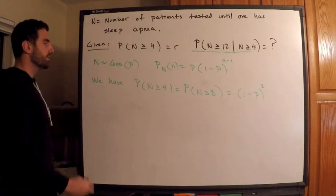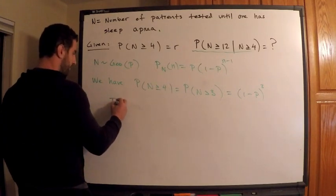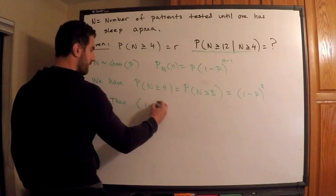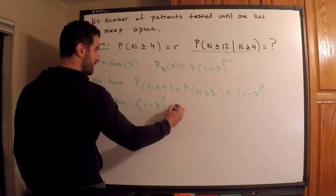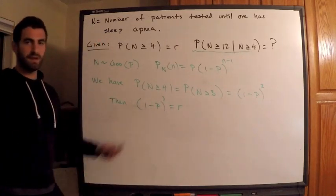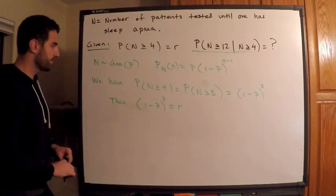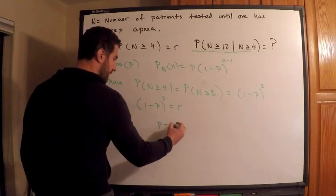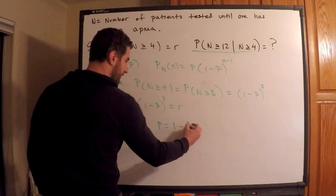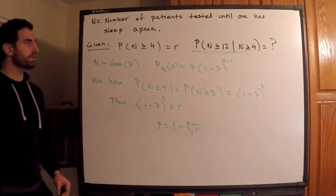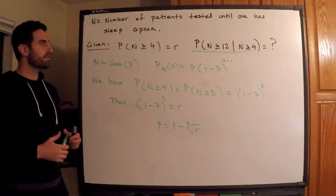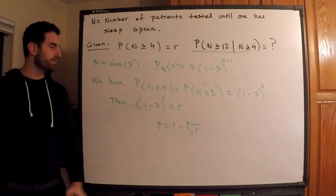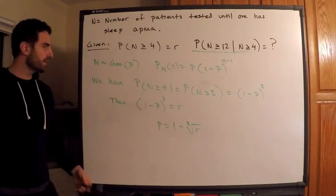Okay, refer to that video if you didn't see that. We're given that that's equal to r, so then (1 minus p) cubed is equal to r. Let's find out what p is then. I'm gonna get p by itself. This tells me that p is equal to 1 minus the cube root of r. Alright, this is algebra there. There's my value for p.